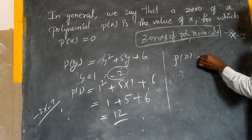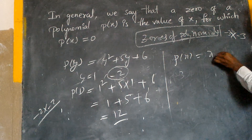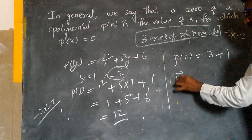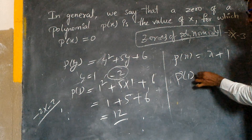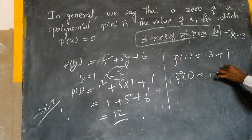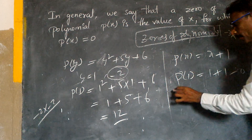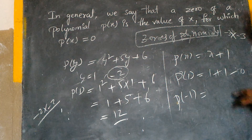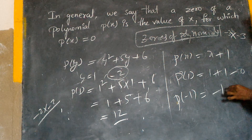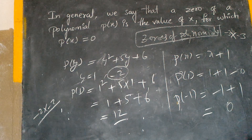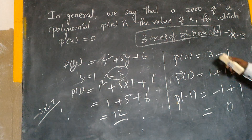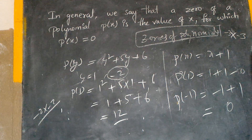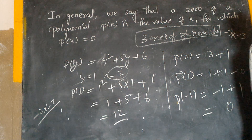P of x is equal to x plus one. P of one: one plus one, not zero. P of minus one: minus one plus one equals zero. So minus one is the zero of the polynomial.